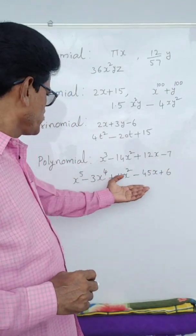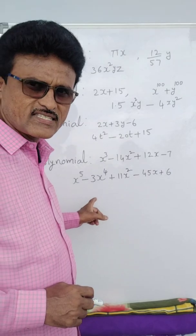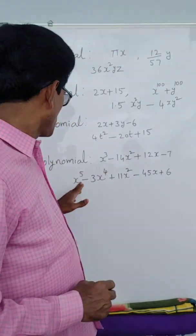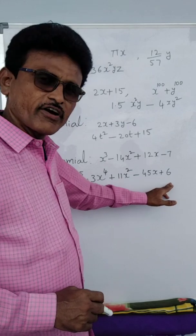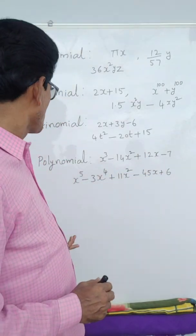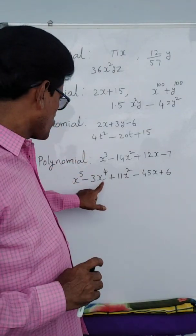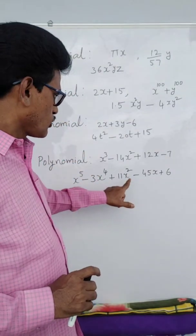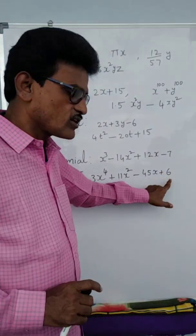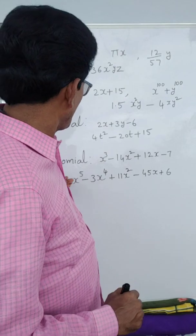Now here is a fifth degree polynomial — highest power of variable x is 5. There are 1, 2, 3, 4, 5 terms, so it is a polynomial. Coefficient of x⁵ is 1, coefficient of x⁴ is minus 3, coefficient of x² is 11, coefficient of x is minus 14, constant term is 6. Sometimes they will give any polynomial and ask questions.